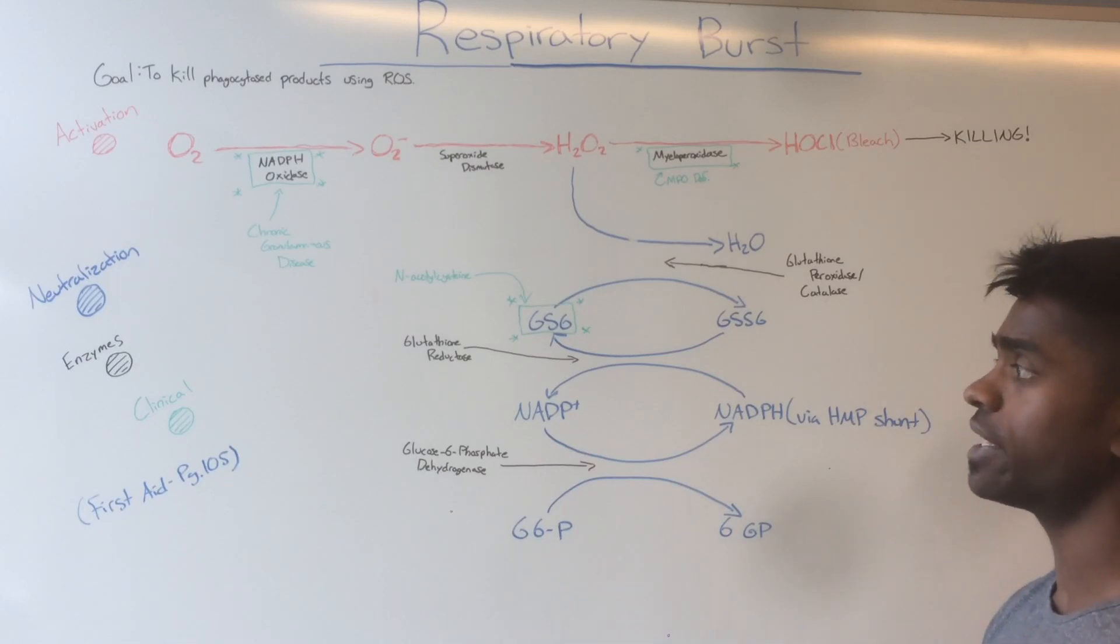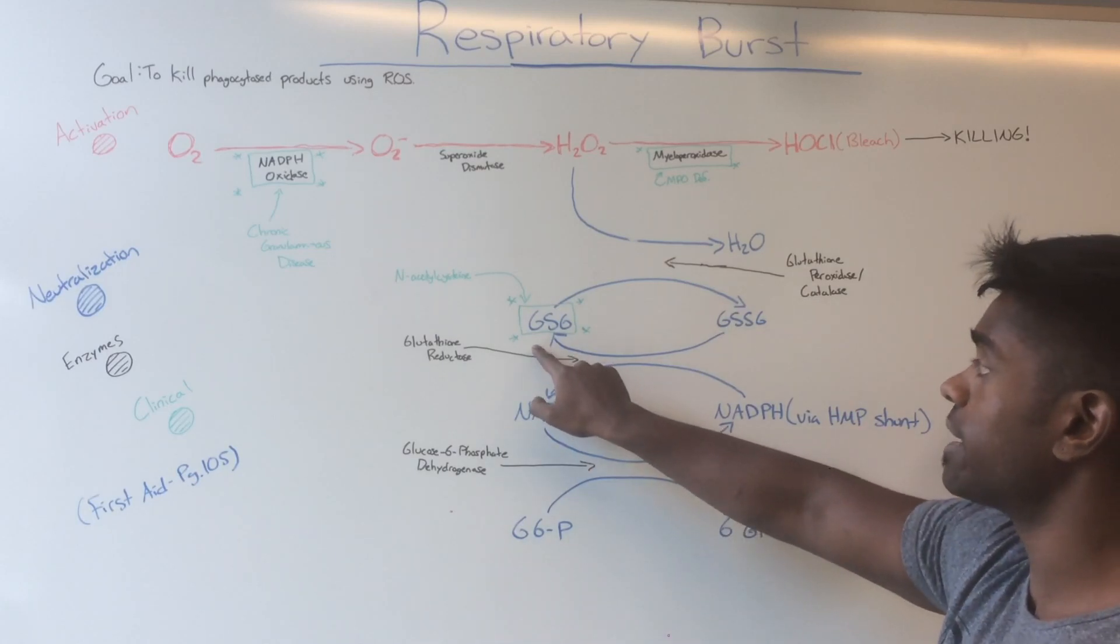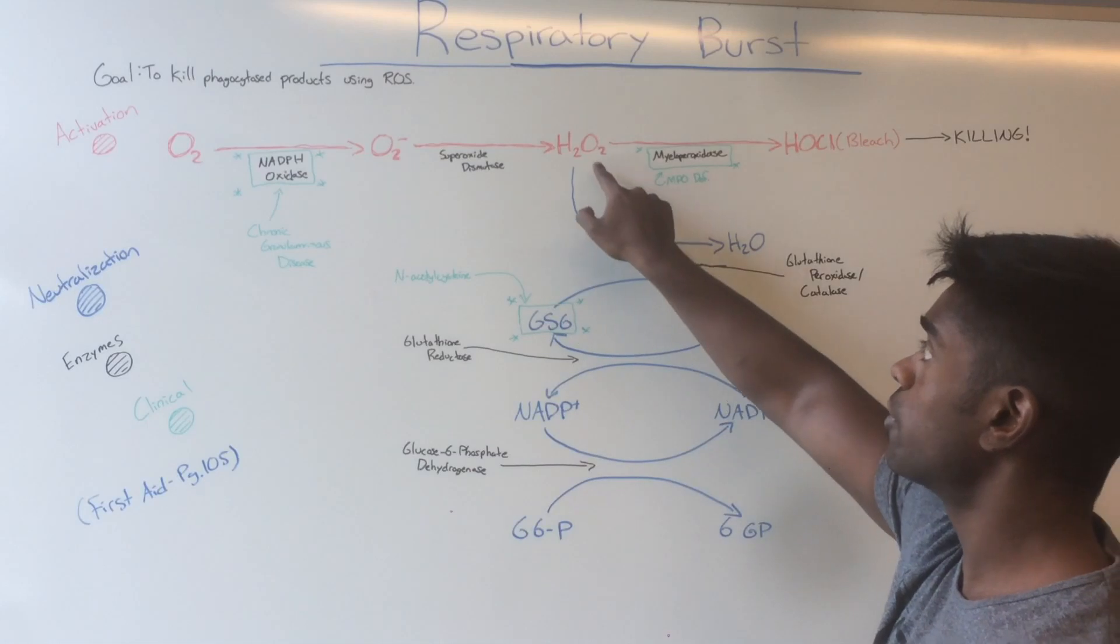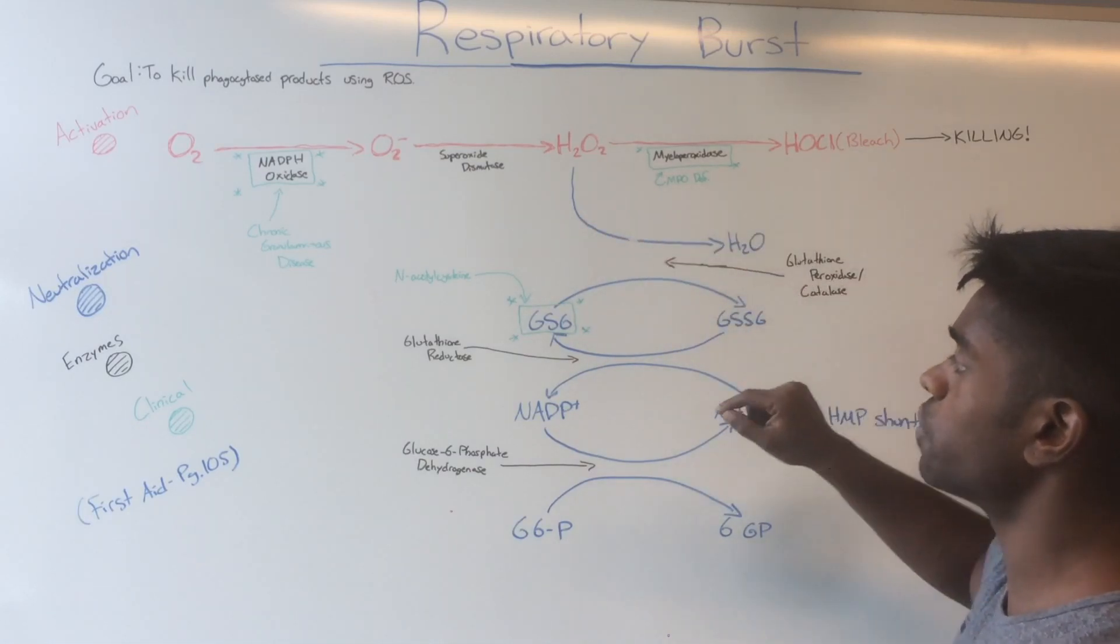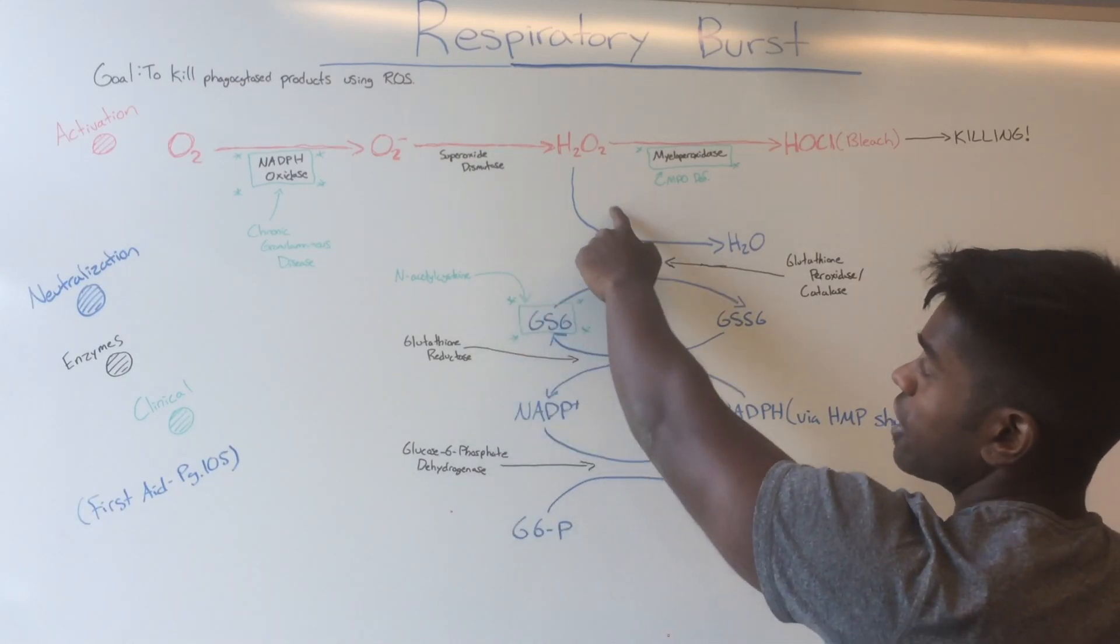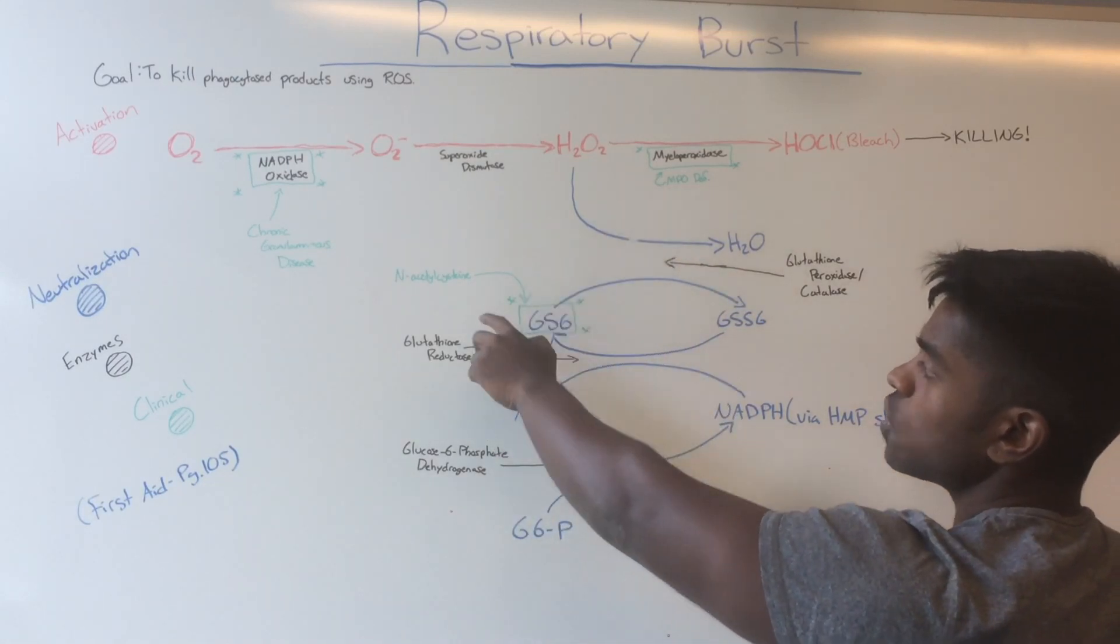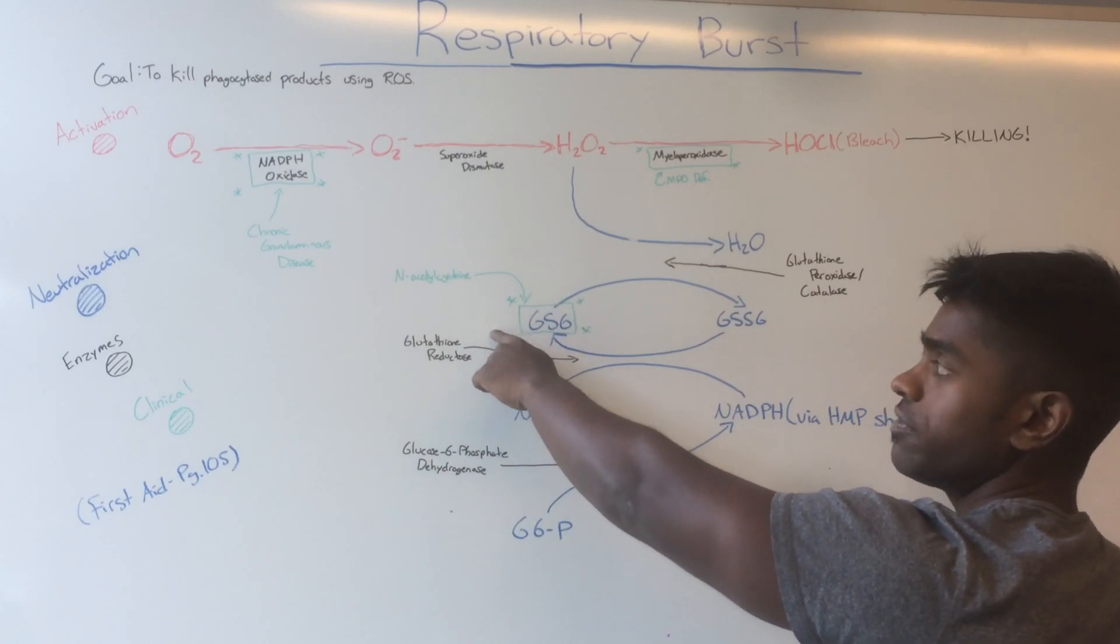The next topic relates to the neutralization pathway. Glutathione in its reduced form is absolutely needed to neutralize free radicals. When you have decreased levels of glutathione, you're going to have an increase in free radicals.